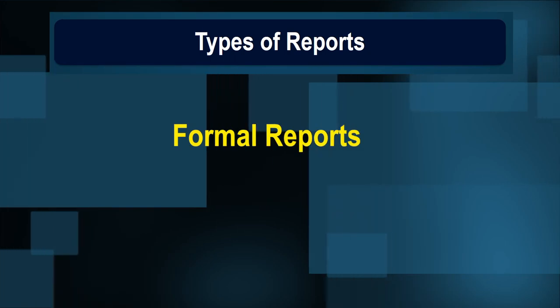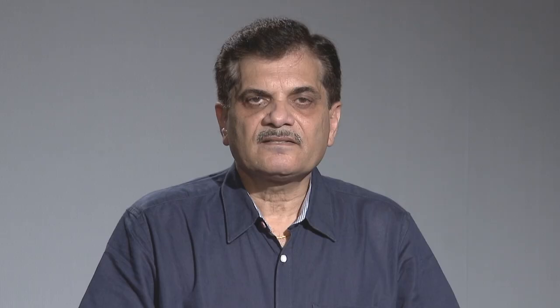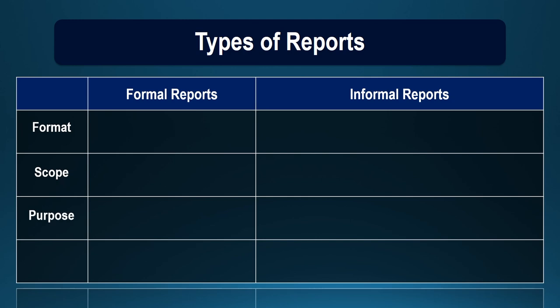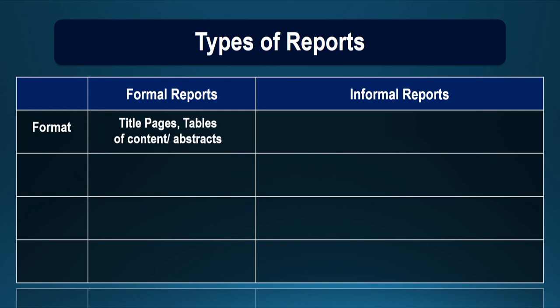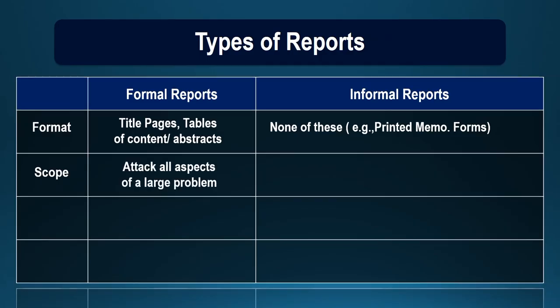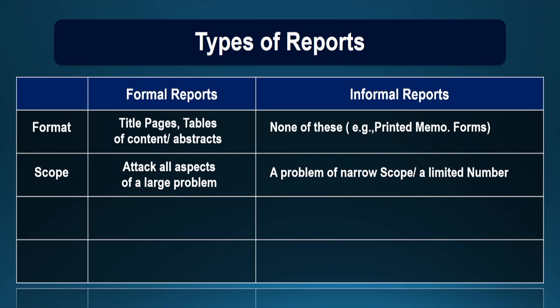A research report can be classified into formal reports and informal reports. Let us compare these two types of reports on the basis of format, scope, purpose, and readers. Formal reports contain the title page, the table of contents, and the abstract, whereas informal reports may or may not have the title page, table of contents, or abstract. The formal report attacks all aspects of a large problem, whereas in an informal report the scope is very narrow or limited.